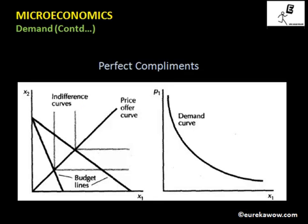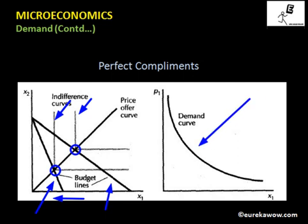In the case of perfect complements, the indifference curves are L-shaped. When the price of good one increases from P1 to P2, the budget line rotates inward. The initial bundle and the final bundle chosen by the consumer show a clear decrease in the quantity demanded of good one as its price increases. There is an inverse relationship between the price of good one and the demand for good one, so the demand curve is downward sloping.